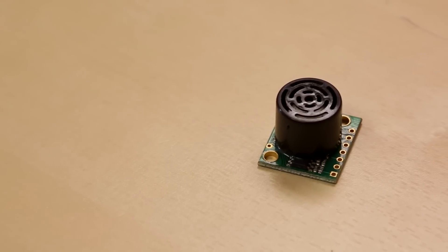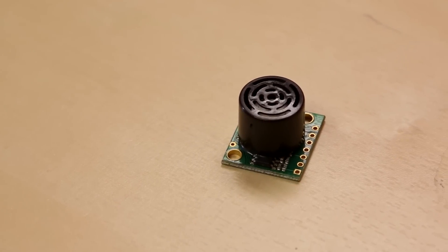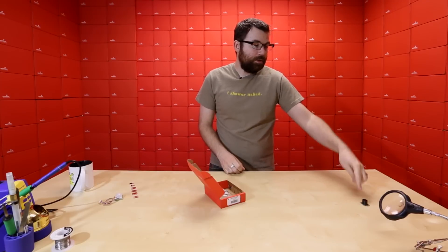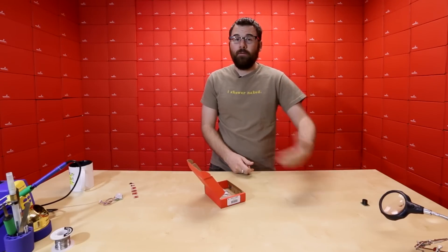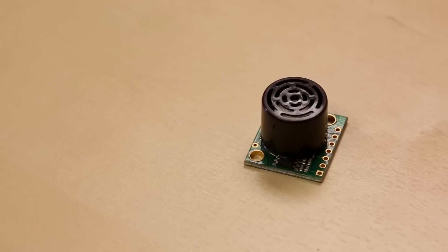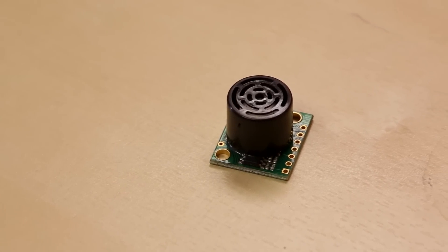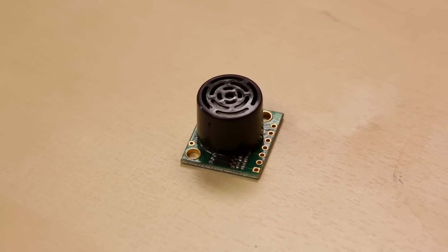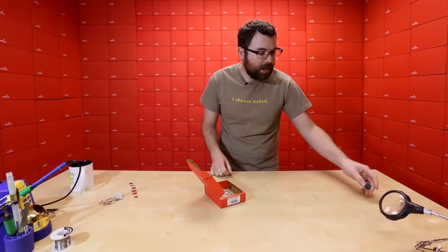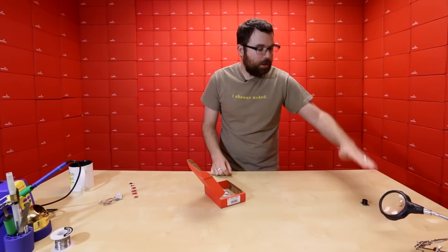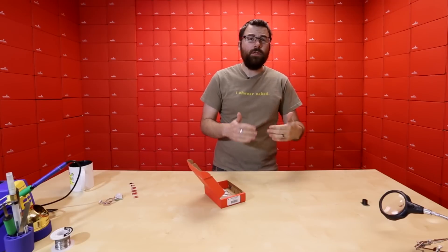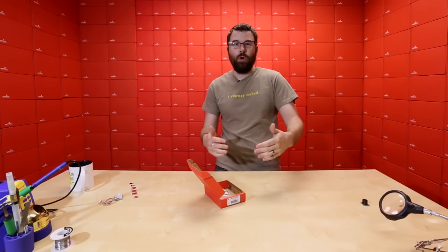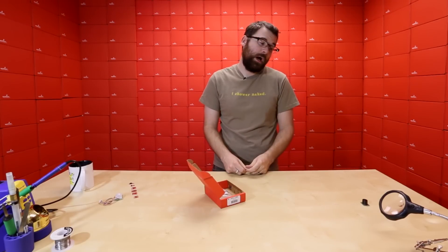This little guy is the LVEZ1. This is an ultrasonic range finder. It emits pulses out of the end, and when it bounces back, it reads them, and it can detect how far something is away. This one in particular has a very simple analog and an RS-232 interface, so you can talk to it either way, and it can detect objects pretty close to far away. You could use this for like a tape measure, or as a distance sensor for a robot to detect how close it was getting to an object.